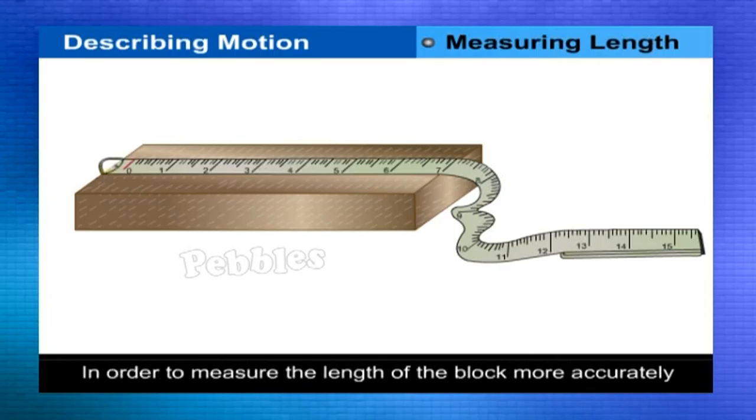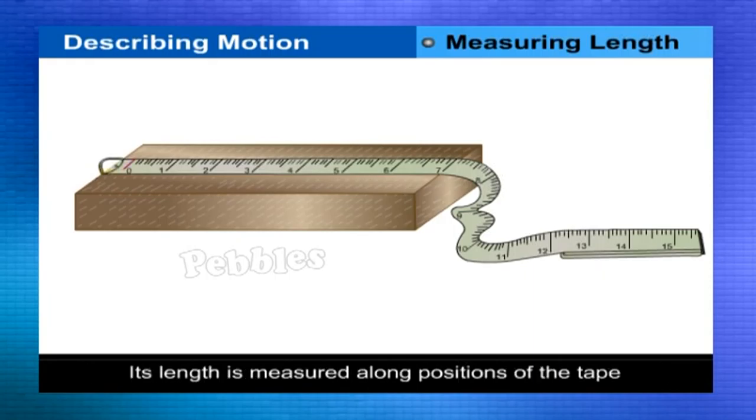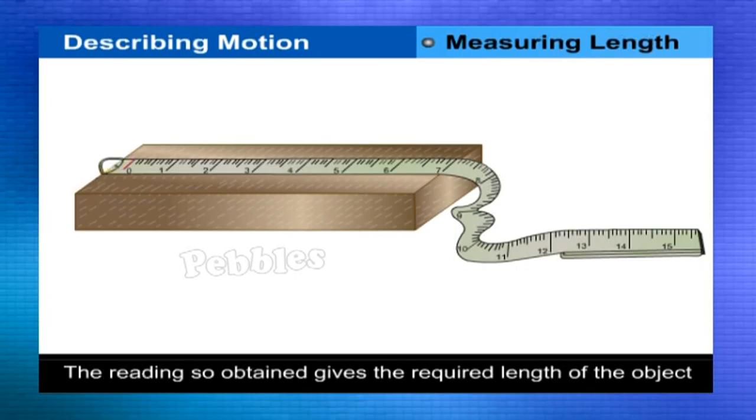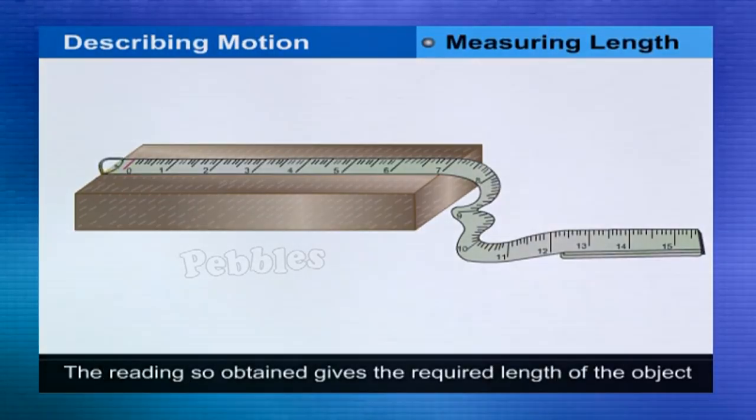In order to measure the length of the block more accurately, its length is measured along different positions of the tape instead of the zero mark. Any other mark, say two or five, and then the average of these measurements is taken. The reading so obtained gives the required length of the object.